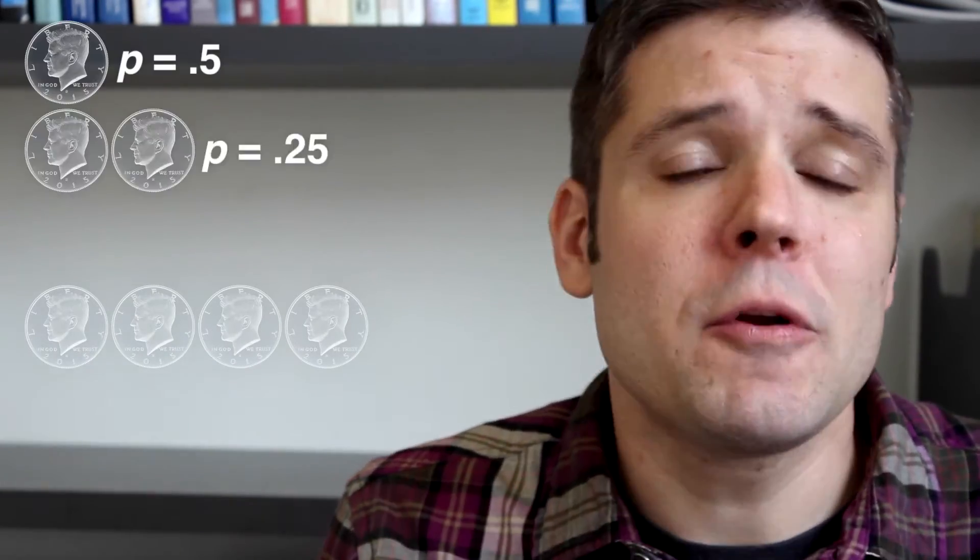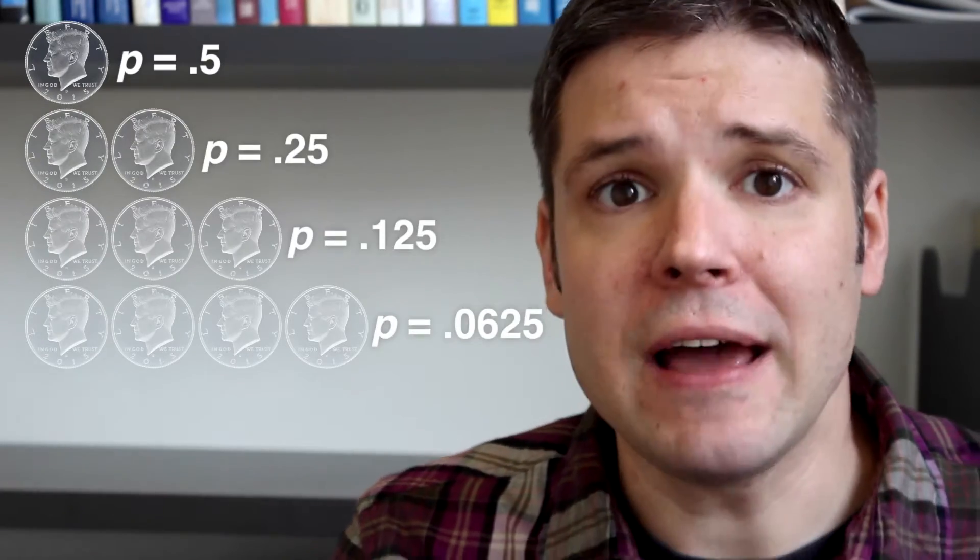So we decide to test it, flipping the coin over and over to see what happens. And right off the bat, we get four heads in a row. Now, if the coin was fair, there would be a .0625 likelihood of this happening. So we flip once more, getting heads again, making that five in a row.